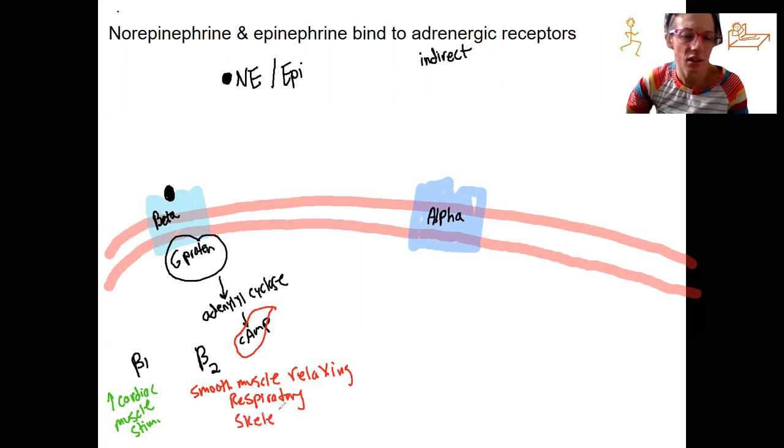Does this make sense? When we have a bear running after us, do we want our smooth muscles to be relaxing in our respiratory passageways and our skeletal muscles? Hell yes! We want more blood flow to our skeletal muscles. We want more air flow into our lungs. We want our heart beating faster. Makes sense, yeah?